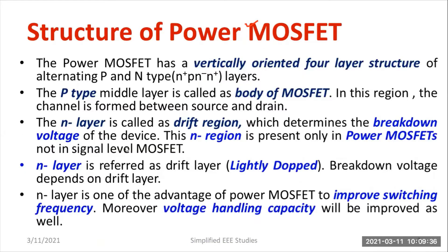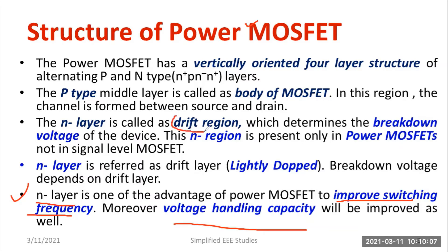That's the difference. Another speciality of the N minus layer is that it improves the switching characteristics of the device — that means it improves the switching frequency. This N minus layer has the peculiarity of enhancing the switching frequency of the device, and it also improves the voltage handling capability. So that's the speciality of the N minus layer; it is also known as the drift layer.